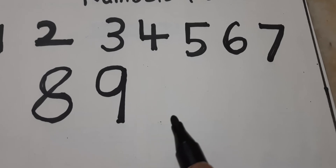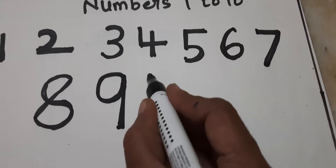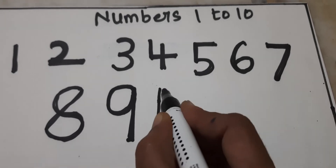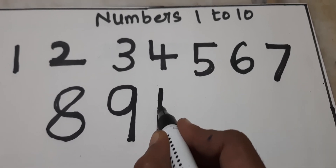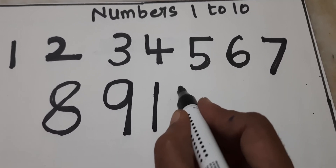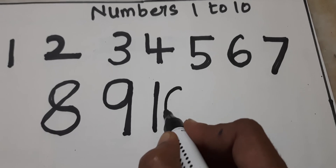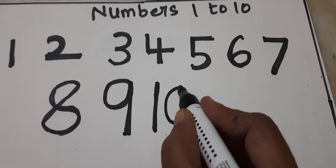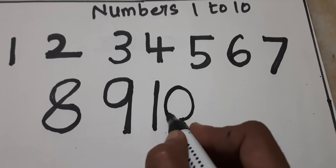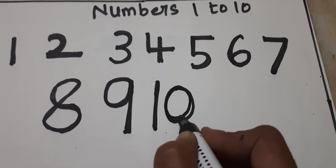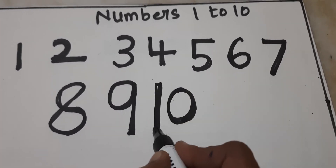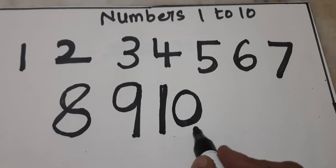How to write 10? Standing line — 1, 0, 10. Standing line for 1. Then how to write 0? Inverted C, then C — 0. Standing line, 1, 0 — 10.